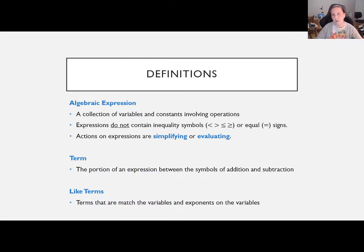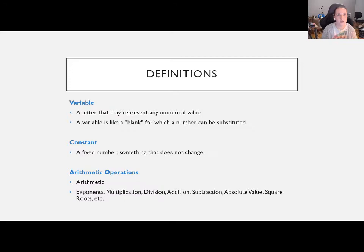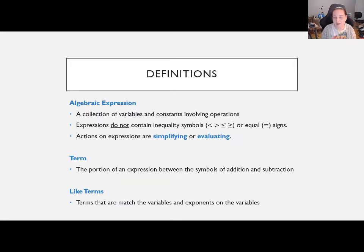Putting those three words together gives us the definition of an algebraic expression: a collection of variables and constants involving operations. What makes it algebraic is the fact that it includes variables. If there are no variables, it's just generally an expression. An expression is anything without an equal sign, less than, or greater than symbols — it's a combination of letters, numbers, and symbols.